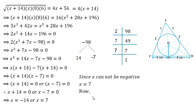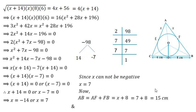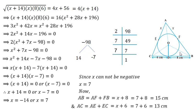Now I have the value of X. AB = AF + FB = X + 8 = 7 + 8 = 15 cm, and AC = AE + EC = X + 6 = 7 + 6 = 13 cm. So the value of AB is 15 cm and AC is 13 cm. Hence we got the value of AB and AC.